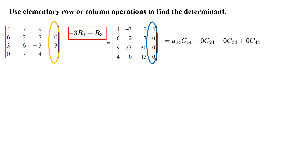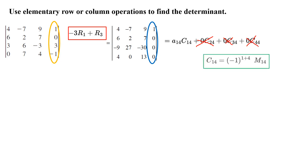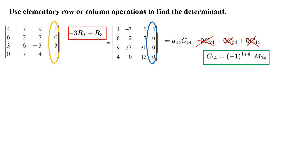Now what? You can use this column and expand with respect to it. You have a₁₄ times cofactor one-four, plus the rest of the entries which are all equal to zero, so we don't have any calculation at all. That makes life much easier when calculating the determinant. Please pay attention: the cofactor for the first row and the fourth column is negative one to the power one plus four, which is five.